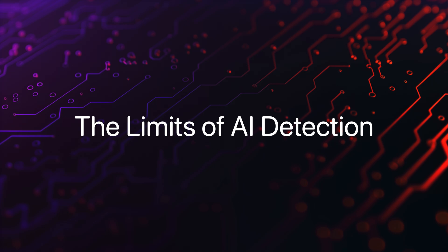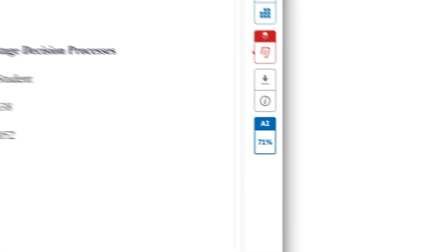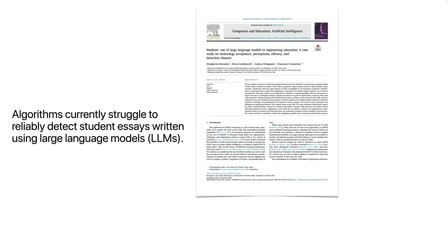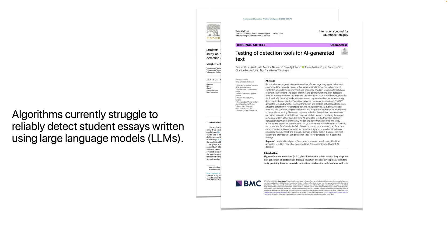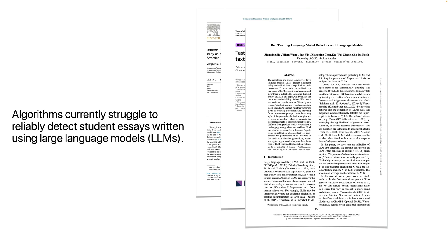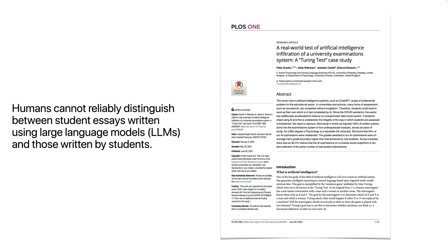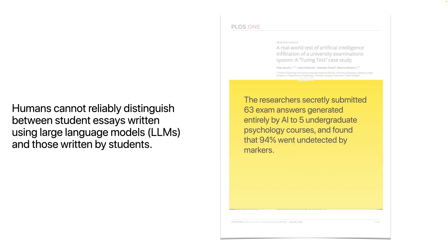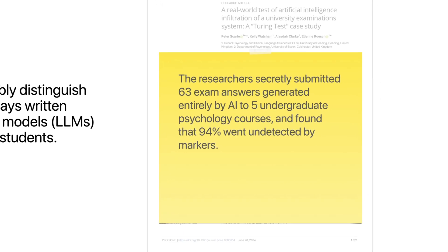Now, you might just think that we can detect and block AI in students' work, but the data suggest otherwise. When a student submits their work at UQ, Turnitin runs the assignment through an AI detection algorithm which assigns a score. The problem is that these algorithms currently struggle to reliably detect student essays written using large language models like ChatGPT, and they seem to be biased against non-native English writers. It turns out that humans can't reliably distinguish between student essays written by LLMs and those written by students. In this recent paper, the researchers secretly submitted 63 exam answers generated entirely by AI to five undergraduate psychology courses.